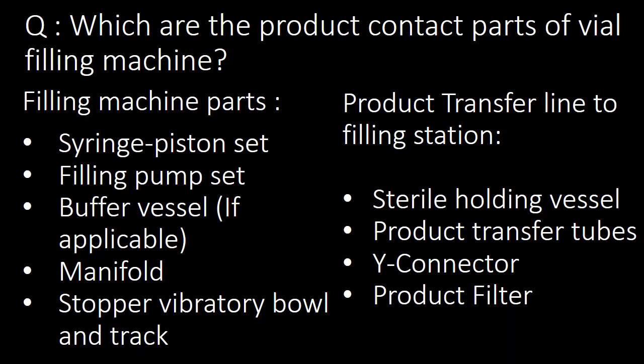Next question: which are the product contact parts of a vial filling machine? Based on equipment and process design, product contact parts may vary. For a normally used filling machine, important product contact parts include the syringe piston set, filling pump set, buffer vessel (if applicable), manifold, stopper vibratory bowl and track, product transfer line, sterile holding vessel, product transfer tubes, wire connector, and product filter.